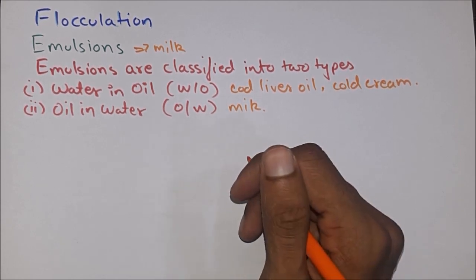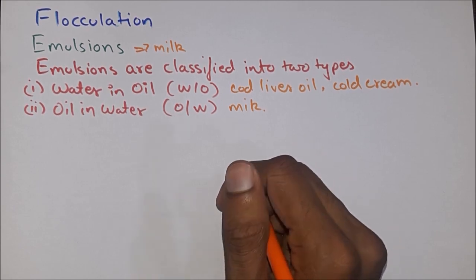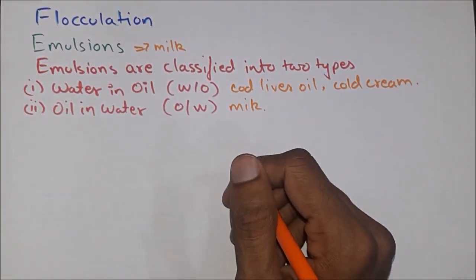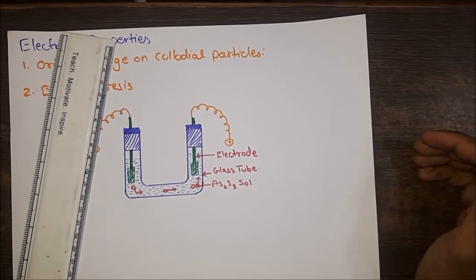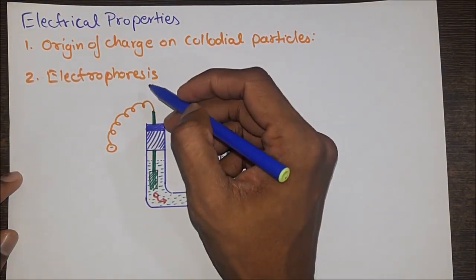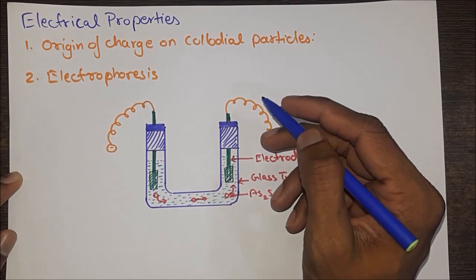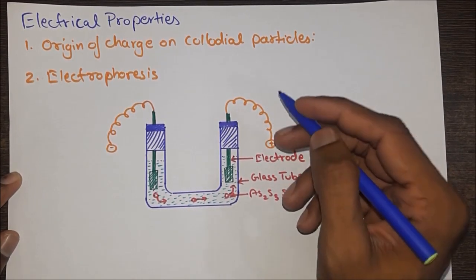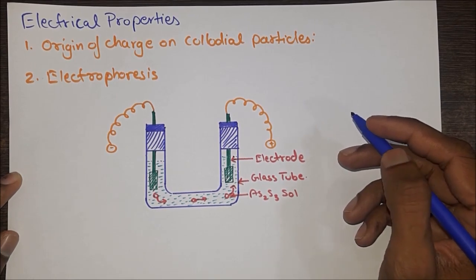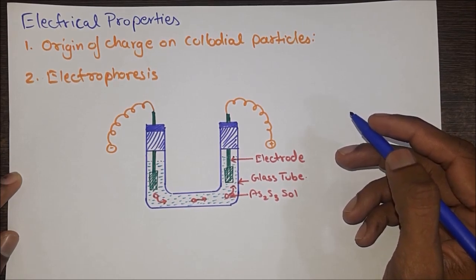Applications of emulsions: cleansing action of soap or detergent; emulsion of phenyl in water is used for disinfection; preparation of pharmaceuticals; many paints are used in emulsion form. Electrical properties — origin of charge on colloidal particles: a small quantity of electrolyte is essential for the stability of colloidal solution. Colloidal particles have a large surface area due to which they selectively adsorb ions of electrolytes that are common to them. Due to preferential adsorption, all colloidal particles have identical charge, causing them to repel each other and making the colloidal solution stable.